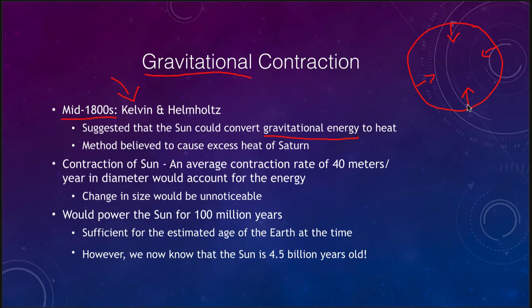It wouldn't have to be very large; it only needs to shrink by about 40 meters per year to account for the amount of energy that we see. At that rate, the change in size of the Sun would be unnoticeable.